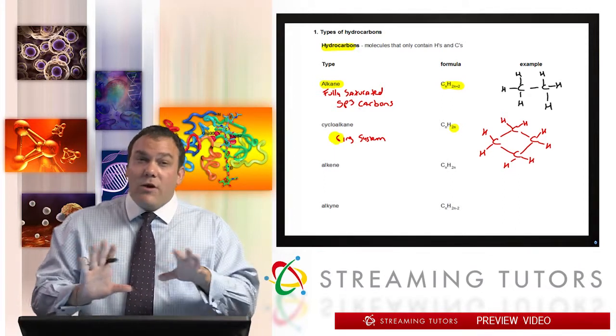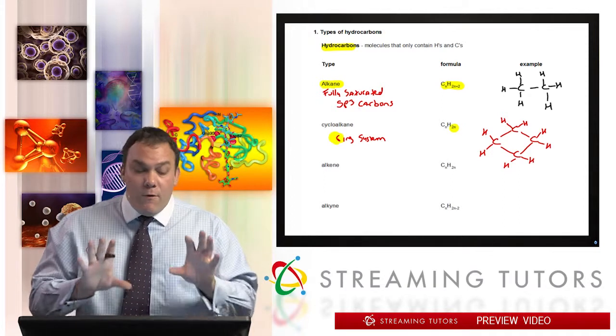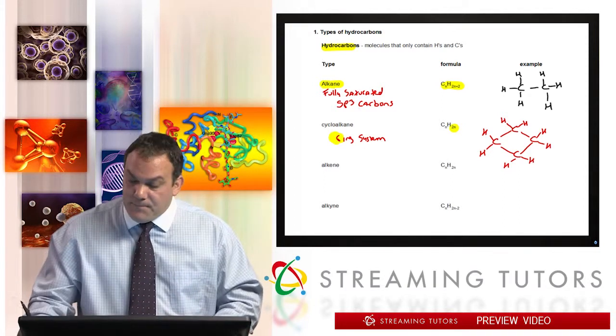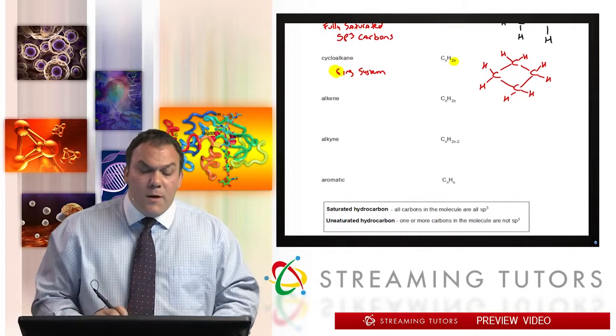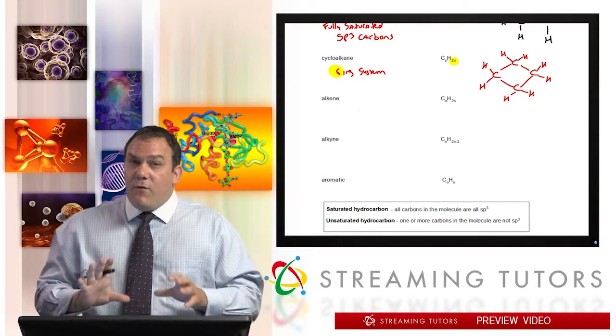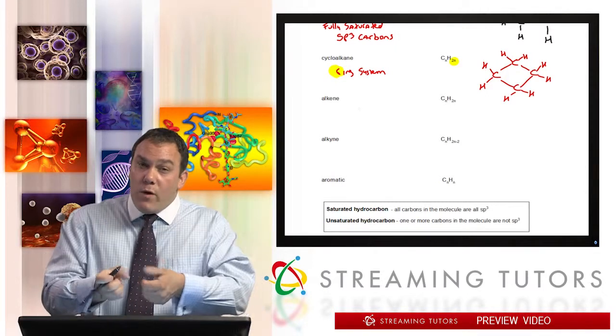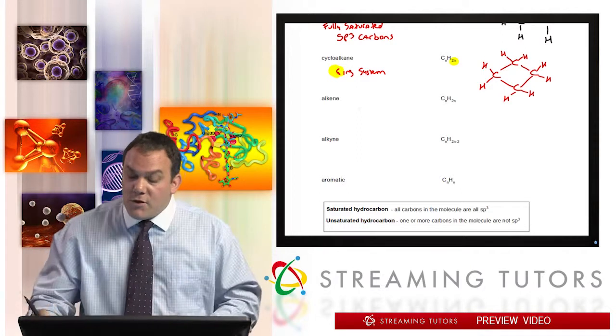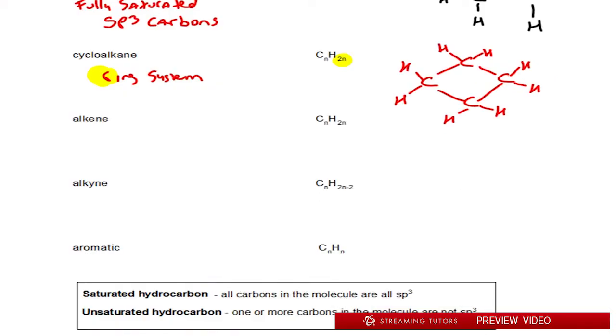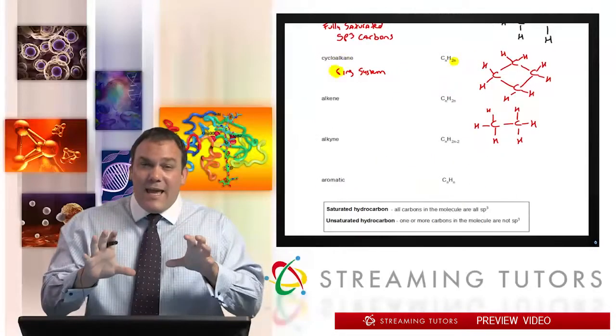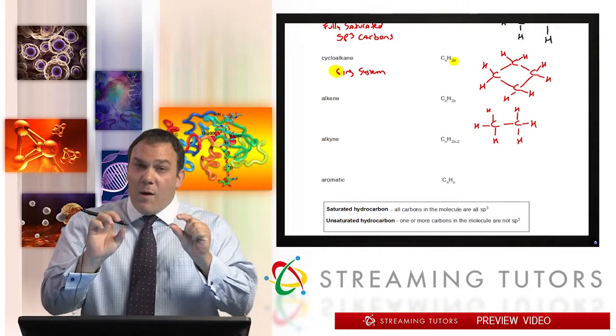Now you could have cycloalkenes and alkynes, we'll learn about them later on, but for now we're going to deal with a cycloalkane. Next one up is alkene. Notice that the alkene formula has the same formula as a cycloalkane because we're removing two H's to make a double bond. I'll show you that thought experiment right now.